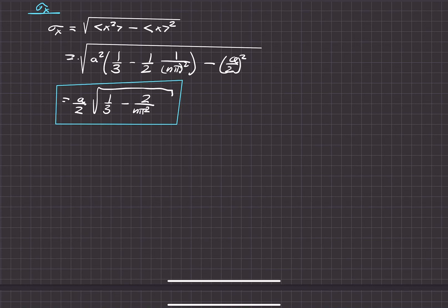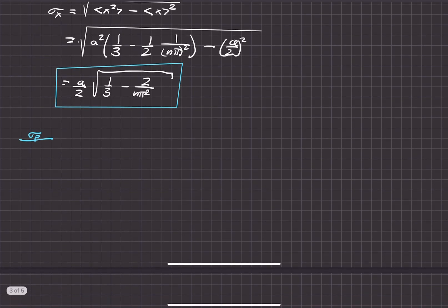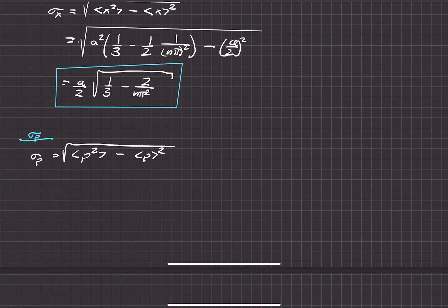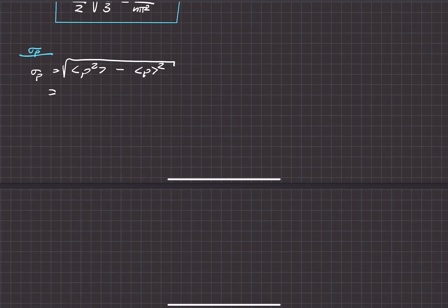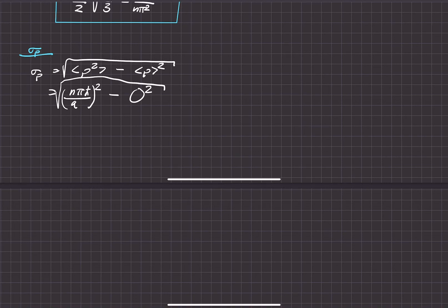For the standard deviation of momentum, it follows the same form: the square root of the expectation value of p squared minus the expectation value of p, squared. We found the expectation value of p squared was n pi h-bar over A, all squared. Since the average momentum was zero, that term vanishes, giving us a standard deviation of momentum equal to n pi h-bar over A.